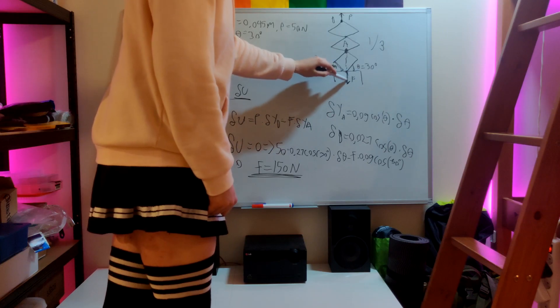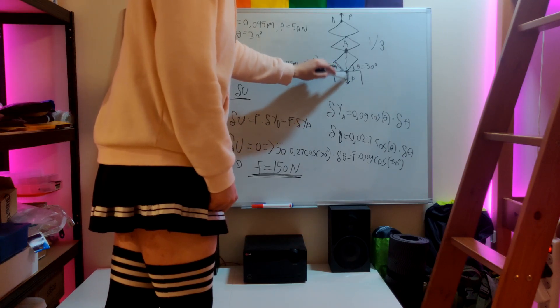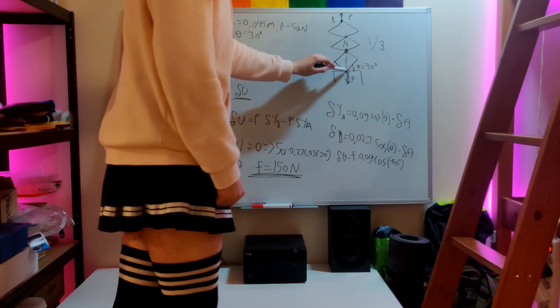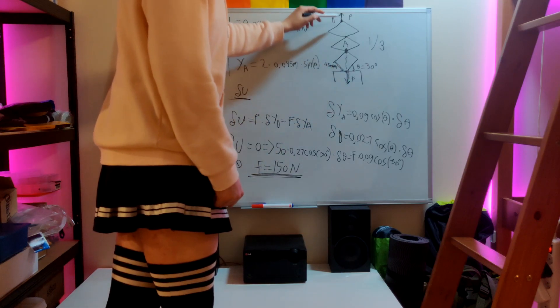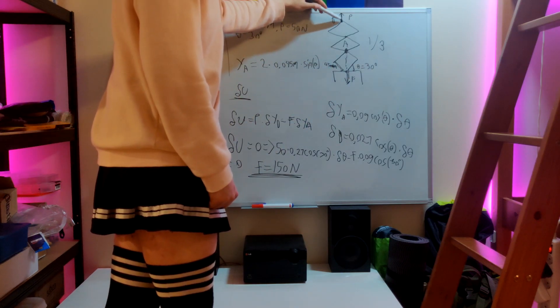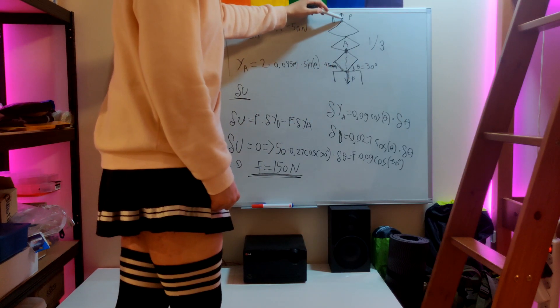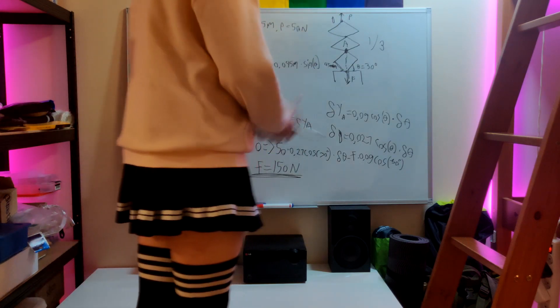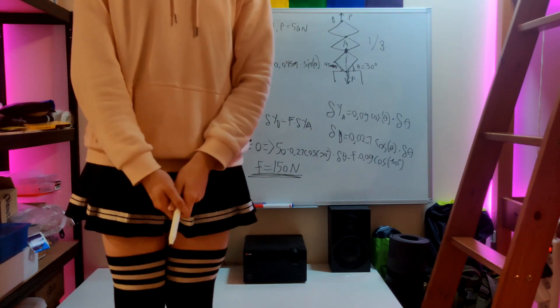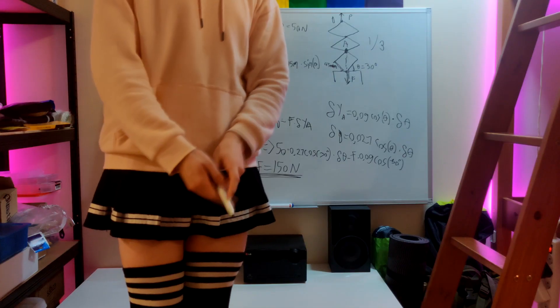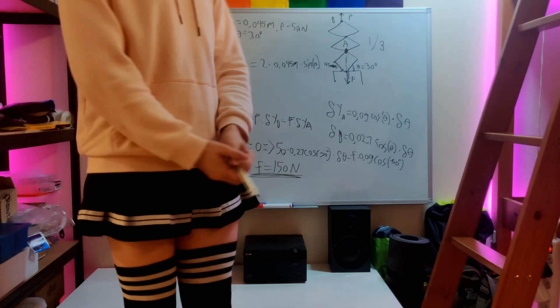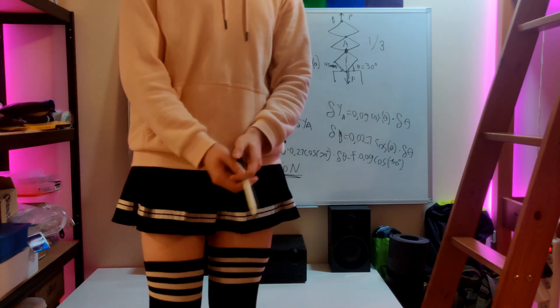Which means that we'll pull the thing out with three times as much force as we exert on this point P right here. So yeah, this was virtual work and scissor mechanisms.